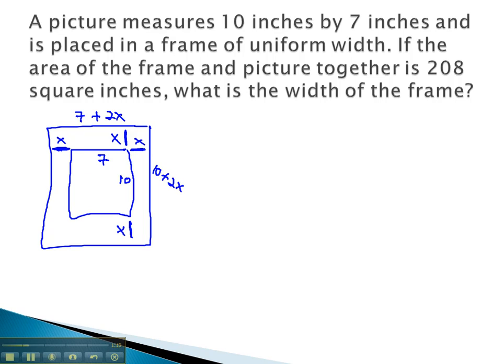We're told that the total area of the frame and picture together is 208. If we multiply width times length, this will give us the area. 7 plus 2x times 10 plus 2x equals 208.